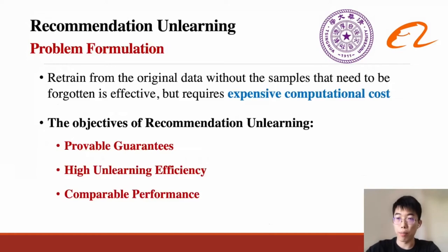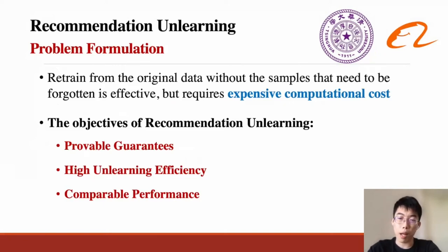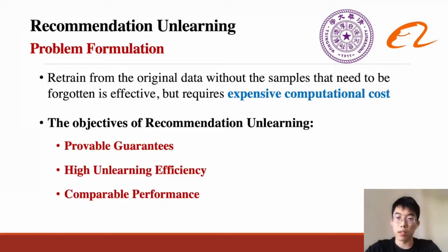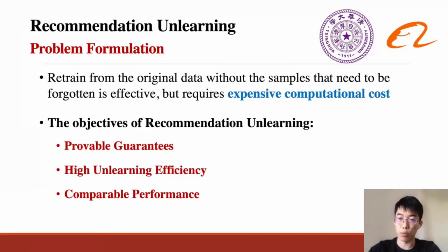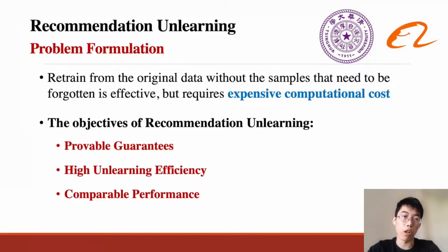While unlearning is very important, it has not been well-considered in existing recommender systems. Although some researchers have studied machine unlearning, existing methods cannot be directly applied to recommendation as they are unable to consider the collaborative information in user-item interactions. The most naive unlearning method is to retrain from the original data after removing the samples that need to be forgotten. However, it requires expensive computational cost for big models and large-scale data.